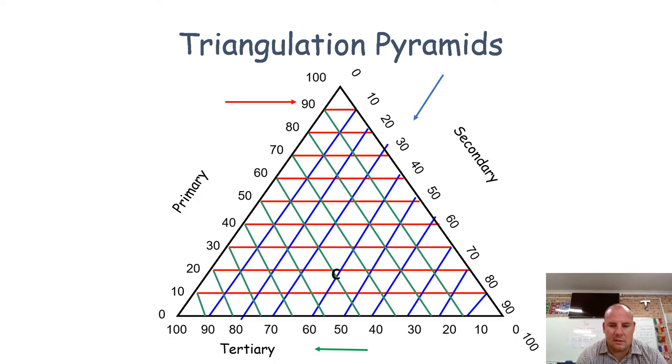Let's have a look at C. C is here. The primary, looking at the red line, is 20. Our secondary is 40, and our tertiary is 40. Those numbers add up to a hundred. I hope that helps, and good luck with your triangular graphs in the future.